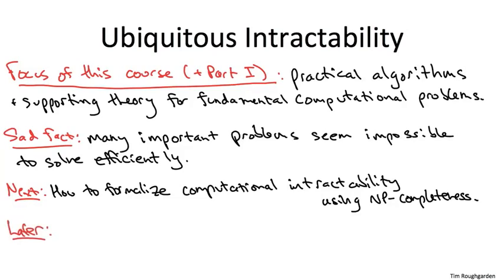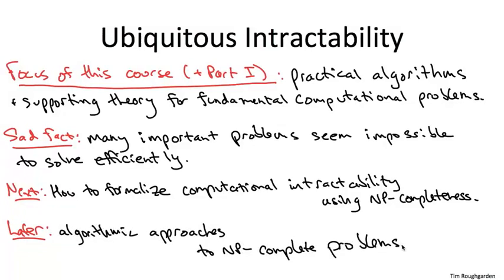My perspective here will be unapologetically that of an algorithm designer, and in particular, after our discussion of NP-completeness, the rest of this course is going to focus on algorithmic approaches to these problems. If you're confronted with an NP-complete problem, what should you do about it?